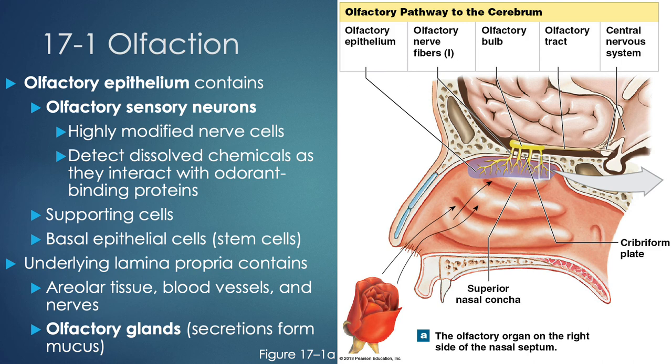The olfactory epithelium is really the business end of our olfactory sense. It will have olfactory sensory neurons that are highly modified nerve cells with dendritic fibers that extend to be able to sense all sorts of different smells. These detect dissolved chemicals as they interact with odor-binding proteins — so essentially, these are chemoreceptors. These olfactory sensory neurons also have supporting cells nearby, as well as basal epithelial cells which are stem cells that help turn over new cells as needed. The underlying lamina propria contains areolar tissue, blood vessels, and nerves. We also have olfactory glands that secrete mucus, which provides protection for those extensive olfactory nerve fibers.